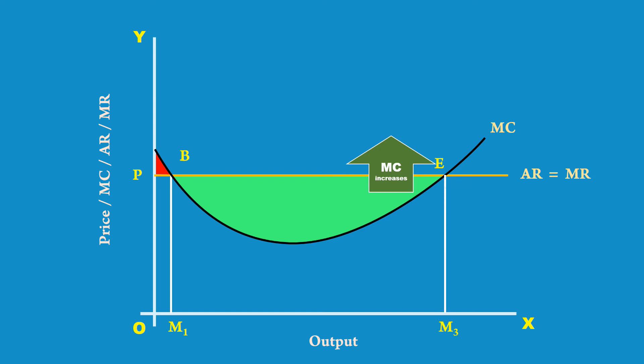M3 is the equilibrium output. Now, let us examine whether the producer's profit is maximized at this point. Profit is the difference between total revenue and total cost. The sum of marginal revenue of each unit of output gives the total revenue. It is OPEM3. The green color area shows this.